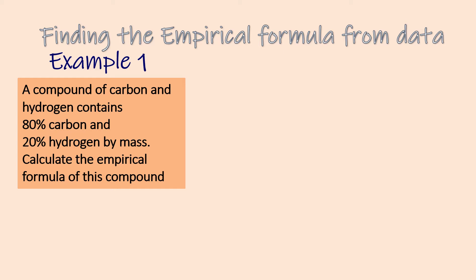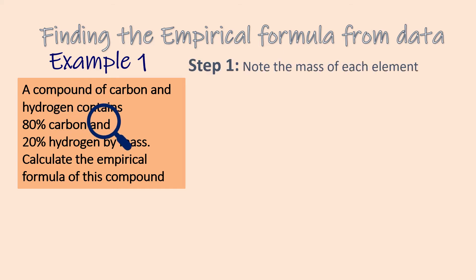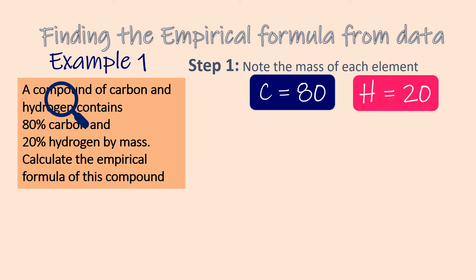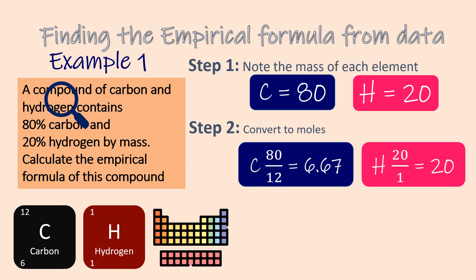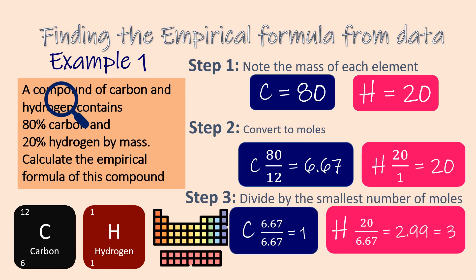Calculating the empirical formula of a compound using given data. Example 1: A compound of carbon and hydrogen contains 80% carbon and 20% hydrogen by mass. Calculate the empirical formula of this compound. This question is solved in three simple steps. Step 1: note the percent by mass of each element — 80% carbon and 20% hydrogen. Step 2: convert the mass of each element to moles by dividing by its atomic mass — use your periodic table for the atomic masses of carbon and hydrogen. Step 3: divide each mole value by the smallest number of moles and round to the nearest whole number. The empirical formula of this compound is CH3.